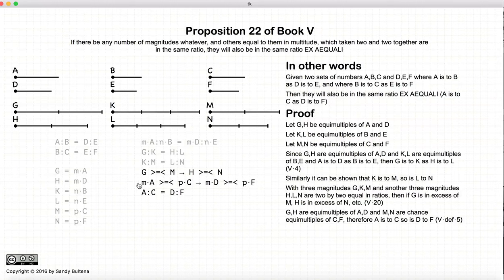So this means or defines the fact that A to C is equal to D to F. So to recap, if we have A to B is equal to D to E, B to C is equal to E to F, then we have shown that A to C is also equal to D to F.